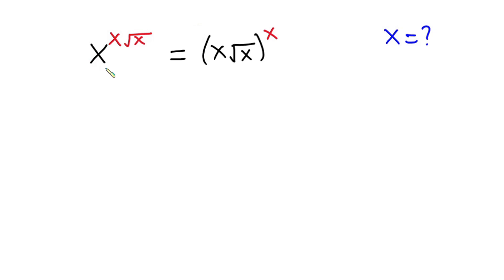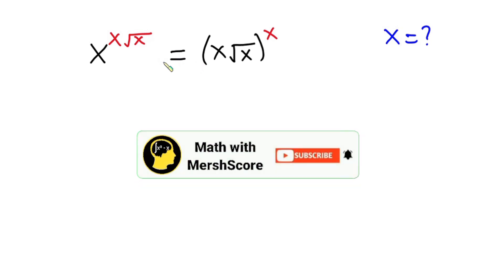Hello everyone. In this video we have this nice exponential equation: x to the power of x times the square root of x, is equal to x times the square root of x, to the power of x, and we have to find the value of x. I'll be using two approaches to solve this problem, but before we begin, as always, pause the video and try first. If you are new here, consider subscribing, and also don't forget to like this video.